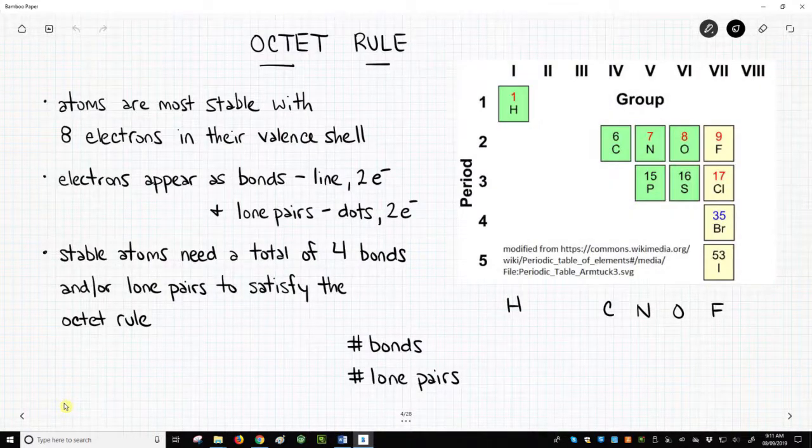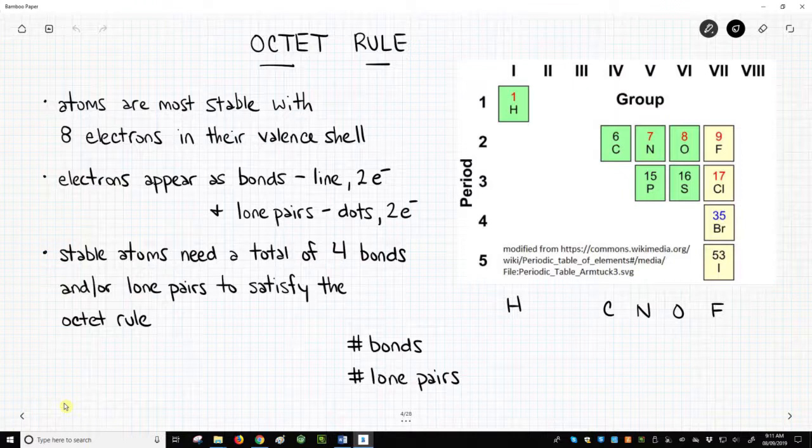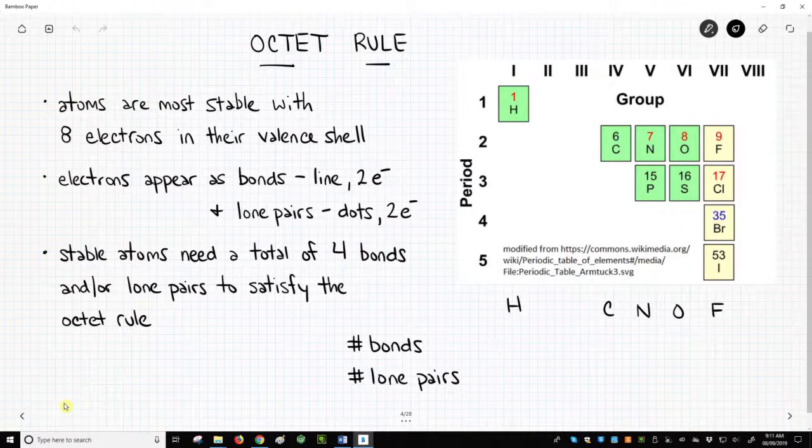On the right-hand side of the screen, I have a partial periodic table. This periodic table shows the 10 elements that are most frequently found in drugs: hydrogen, carbon, nitrogen, oxygen, fluorine, phosphorus, sulfur, and then chlorine, bromine, and iodine.